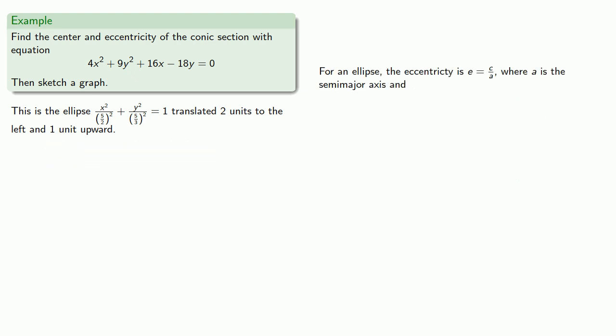For an ellipse, remember the eccentricity is c/a, where a is the length of the semi-major axis, and c, the focal length, is √(a² - b²). So we'll compute c² = a² - b² and find our eccentricity e ≈ 0.7454.